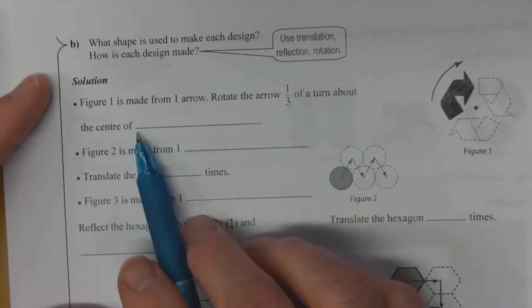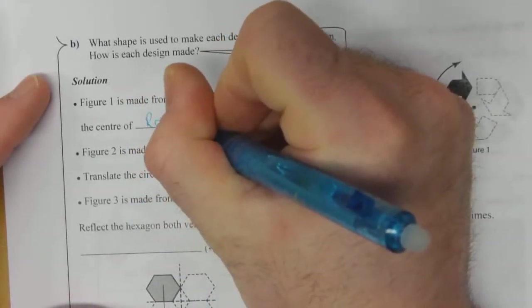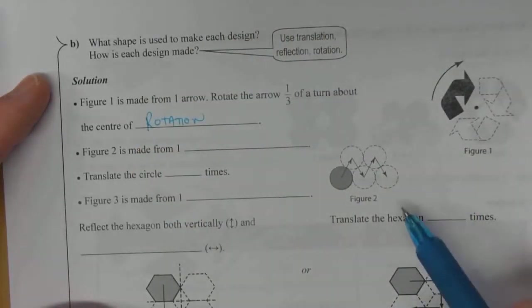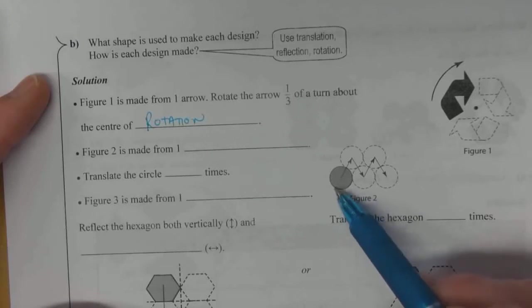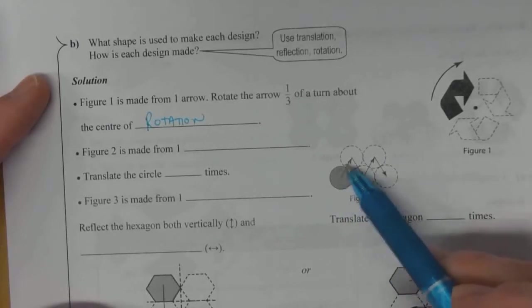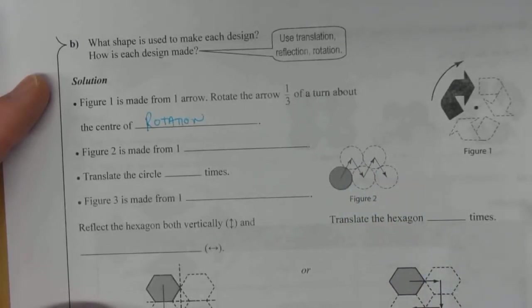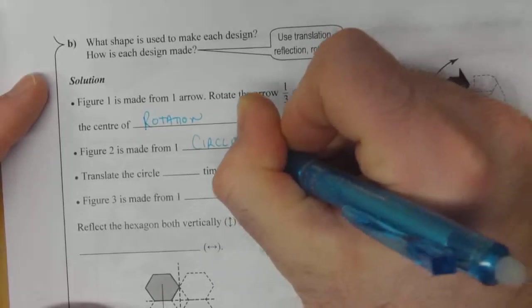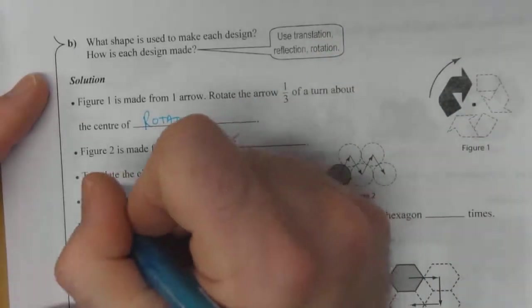Figure 2: we're going to look at making copies without rotating or anything like that. Figure 2 is made from one circle, and then we're going to translate it one, two, three, four times.